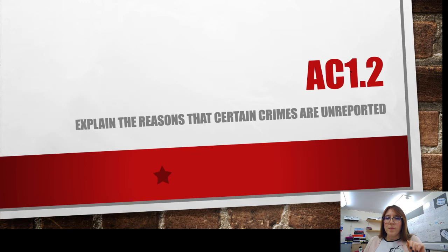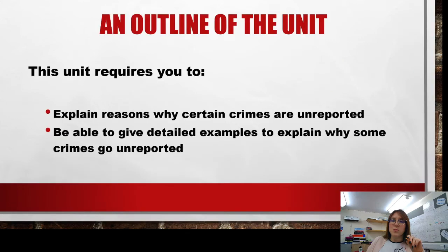So assessment criteria 1.2 — this is 'explain the reasons that certain crimes are unreported.' Please find my previous video for assessment criteria 1.1, which goes over the crimes you need to know for your brief and for your assessment. Whereas this video goes through the reasons why certain crimes are unreported. Within this topic you need to be able to explain reasons why certain crimes are unreported and then also give detailed examples of why some crimes go unreported.